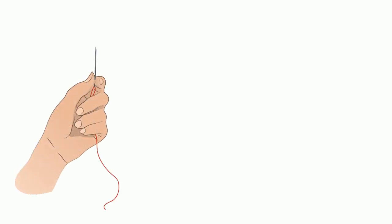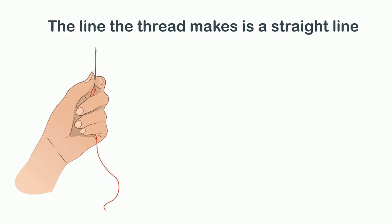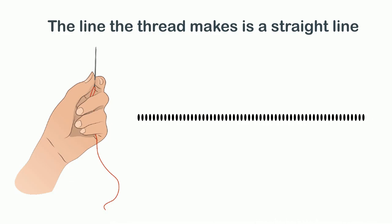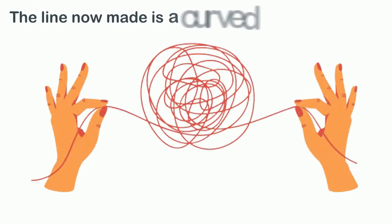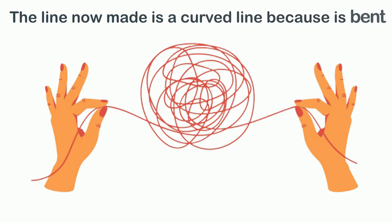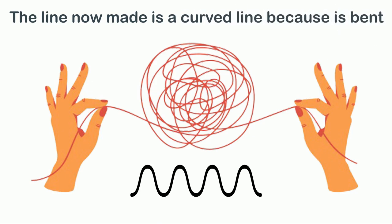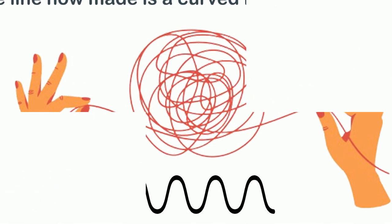For instance, if you hold a thread in your hands tightly, the line the thread makes is a straight line. However, if you hold the same thread a little loosely, the line now made is a curved line because it is bent.